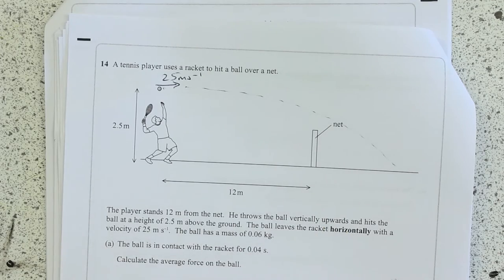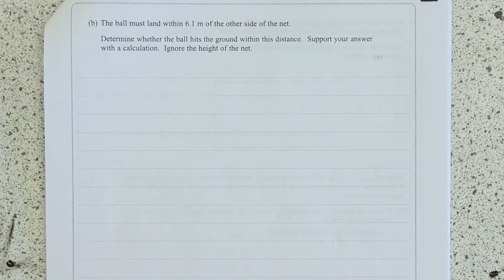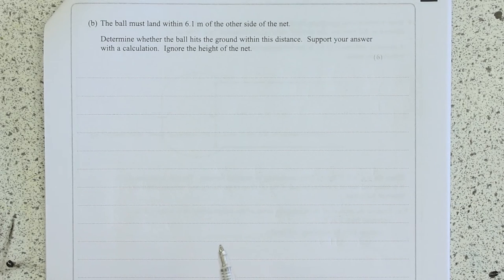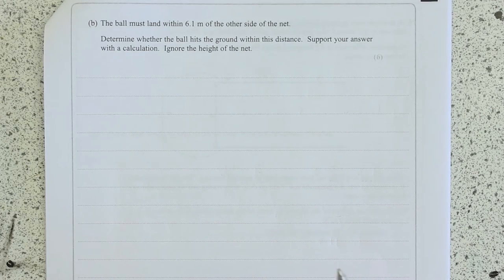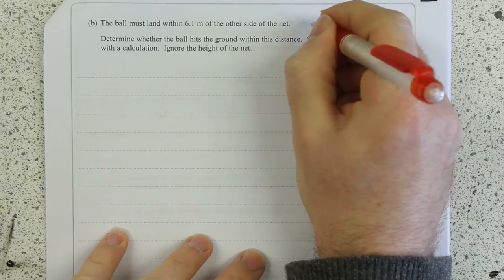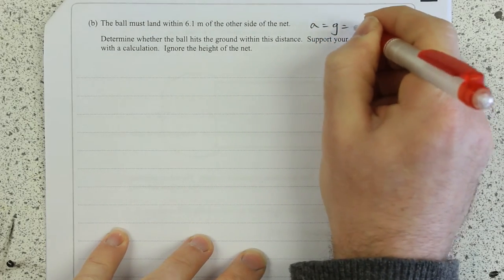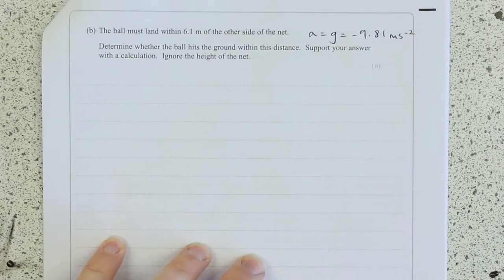Now, whenever you're working with projectiles, you're always going to have to start by figuring out how long is it in the air for. Okay, now to do that, you need the information they didn't tell you, which is A equals G, which is minus 9.81 meters per second squared.